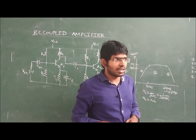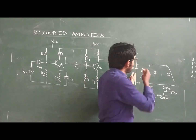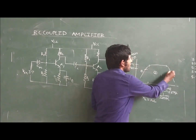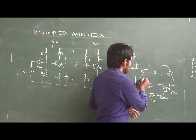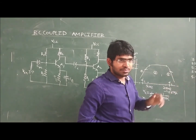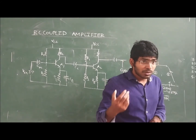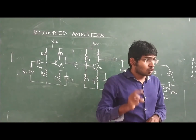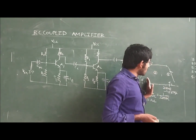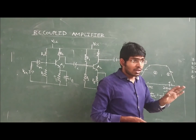That frequency response we will discuss later. Taking the maximum gain as M, the 70 percent points are marked here. If this is F1 and this is F2, then F2 minus F1 is called the bandwidth. The bandwidth of the RC-coupled amplifier is high. So two advantages: first, the gain is constant over a large range of frequencies; second, the bandwidth is high. Therefore, it is suitable in the range of audio frequencies.